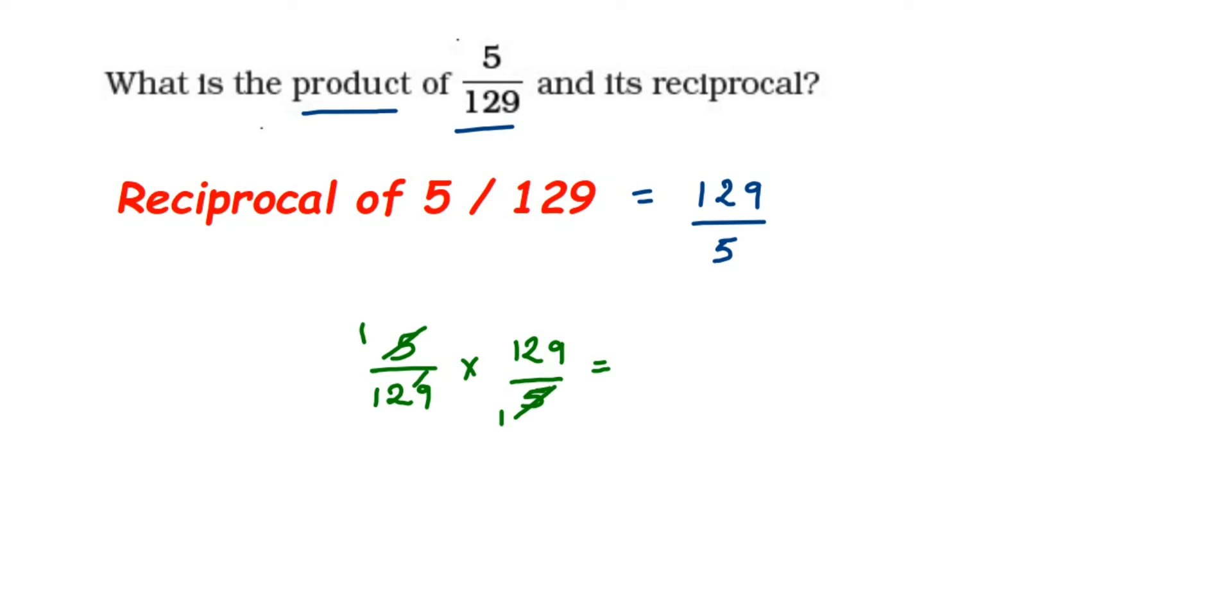129 also cancels with 129, so we got the answer 1. Likewise, if they give you any other number and you're multiplying it with its reciprocal, you always get 1 as the answer.